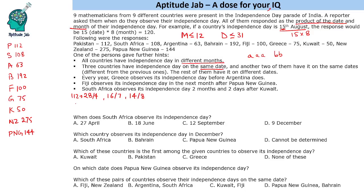Likewise, for South Africa we have 108, which can be written as 27 into 4, 36 into 3, 18 into 6, 12 into 9, or 9 into 12. So likewise for every country we might have multiple possibilities. Let us start with the condition that Fiji observes independence in the next month after PNG.